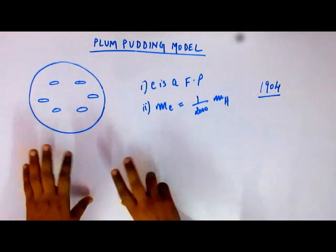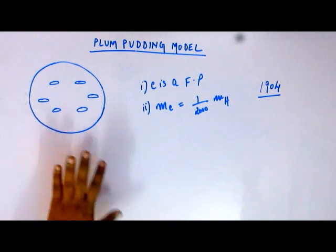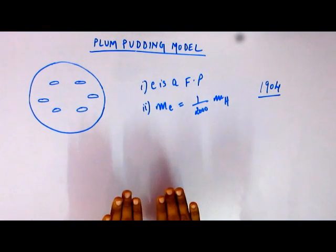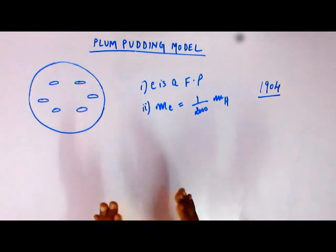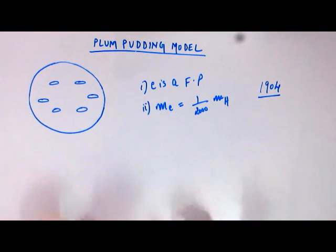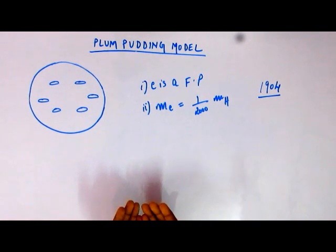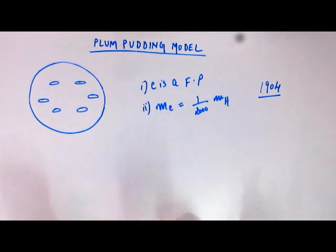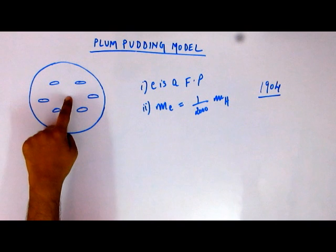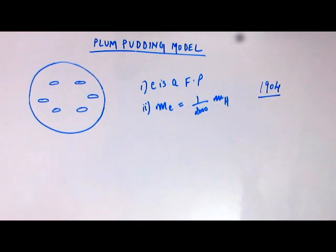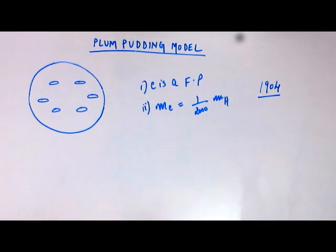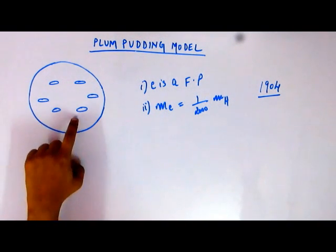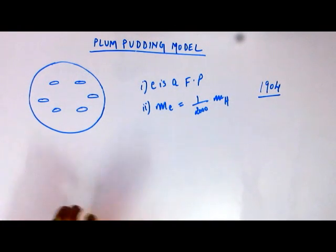Thomson thought of the atom as constituted of two distinct types of matter — one positively charged and one negatively charged. He assumed the positively charged matter is uniformly distributed in the form of a sphere, and the electrons are embedded inside the sphere, symmetrically with respect to the center. This would explain why certain particles come out in the cathode ray tube experiment.